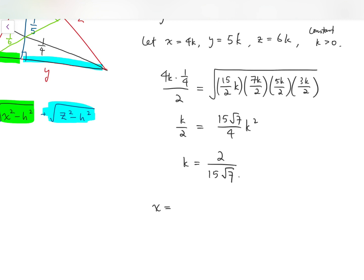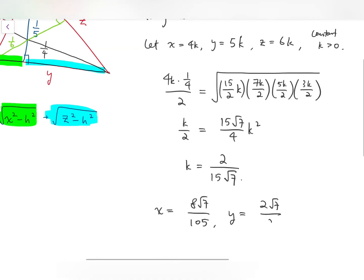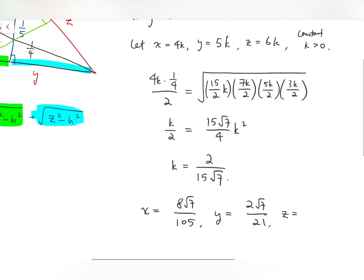So from this, we can quickly calculate that x is just 4 times that, and after rationalizing, we have 8 root 7 over 105, y equals 2 root 7 over 21, and finally z equals 4 root 7 over 35. And so these are our final answers to the system of equations.